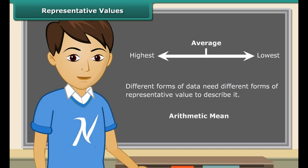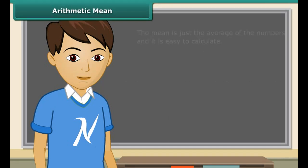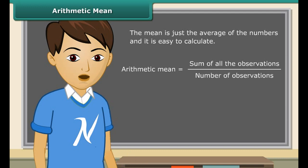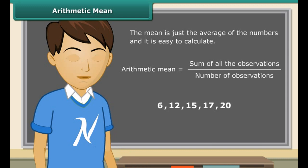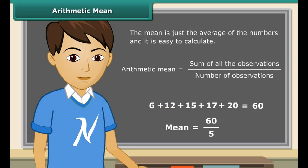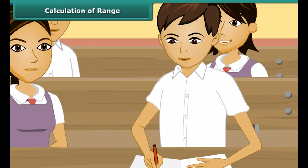Different forms of data need different forms of representative value to describe it. One of these representative values is the arithmetic mean. The mean is just the average of the numbers and it's easy to calculate. Basically, mean is equal to the sum of all the observations divided by the number of observations. Let us calculate the mean of these numbers. Add up the numbers first — the sum of these numbers is 60. There are total 5 numbers, so the mean is equal to 60 divided by 5, which equals 12.